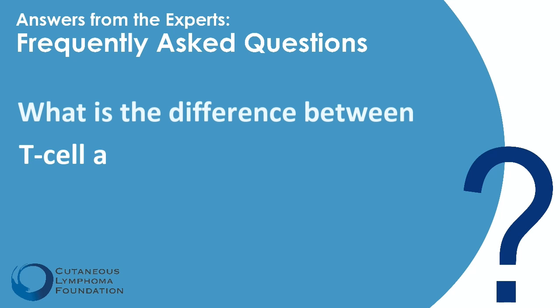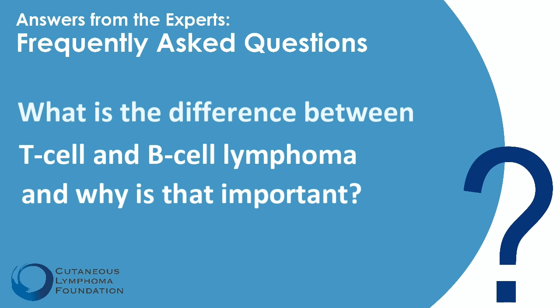What is the difference between T-cell and B-cell lymphoma, and why is that important? The difference comes down to the primary cell that is causing the cancer. Lymphocytes can be subcategorized into both T and B-cells, which have different roles in the immune system and can be targeted differently with therapies. Differentiating between the two clinically is very important to help your doctor decide which treatment pathway would be best for you.